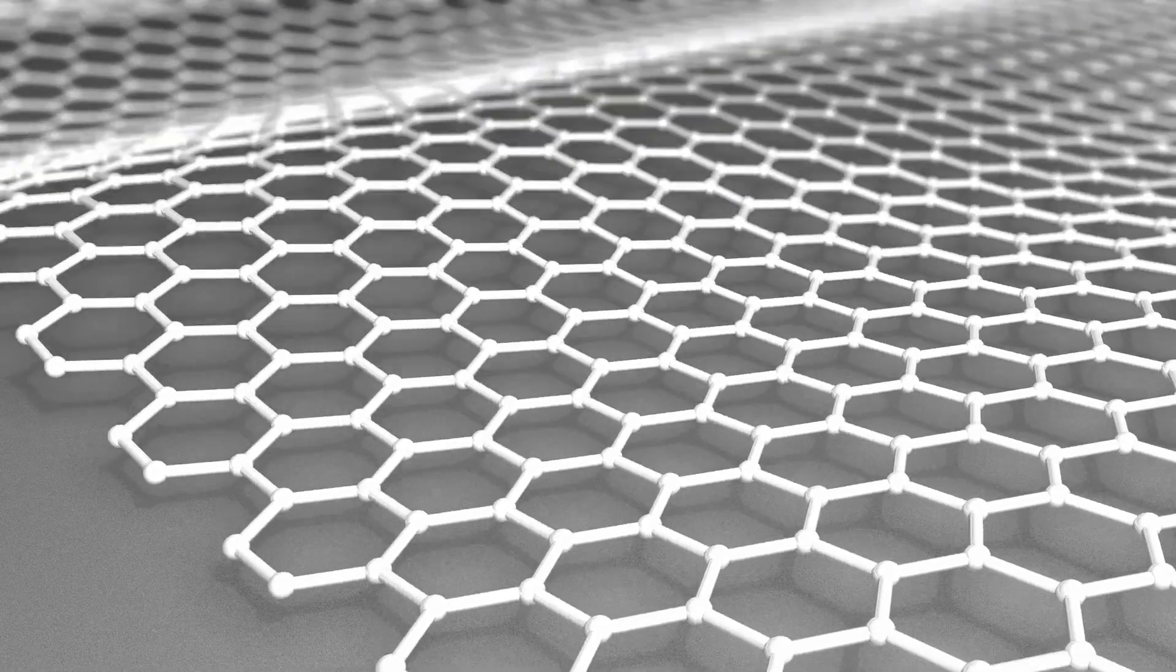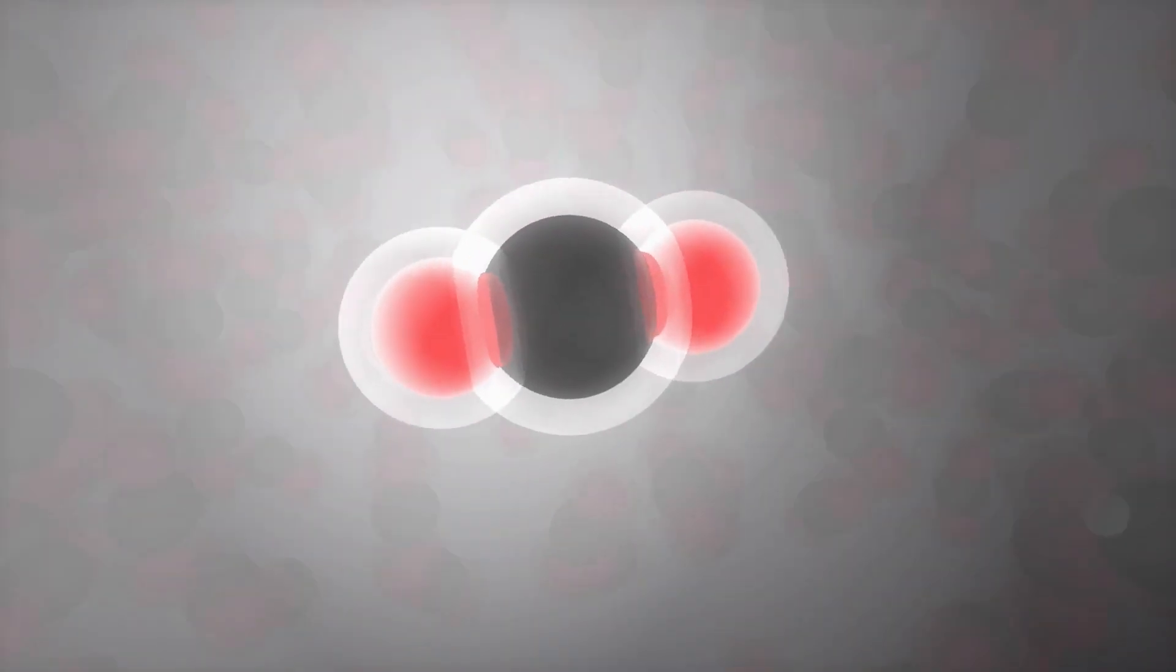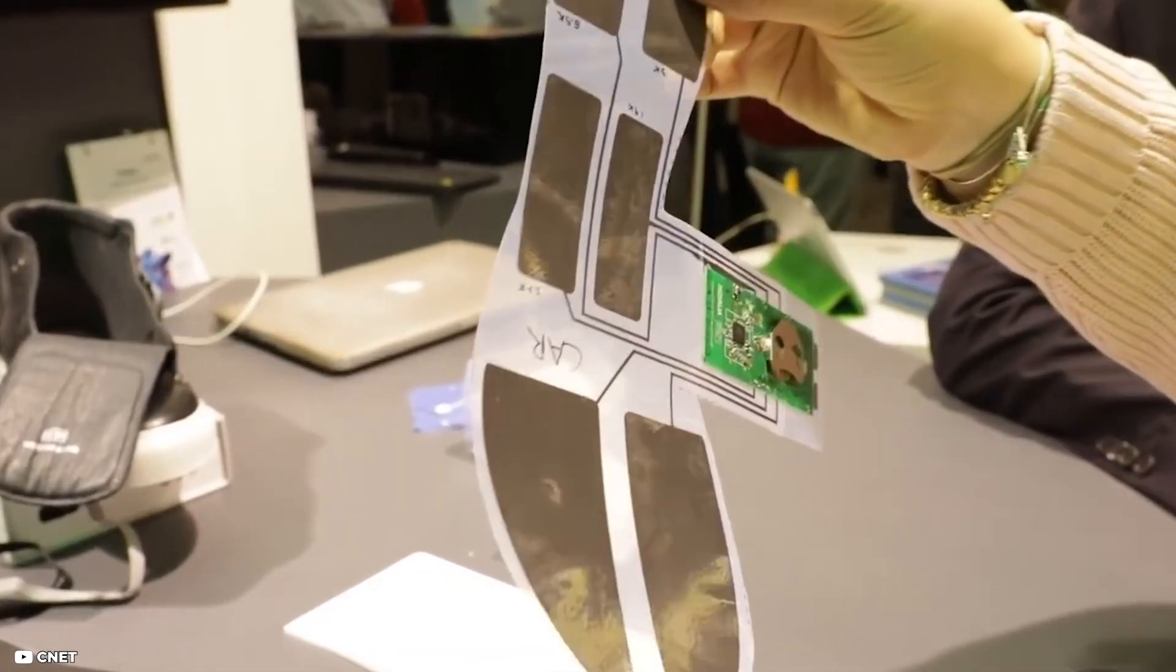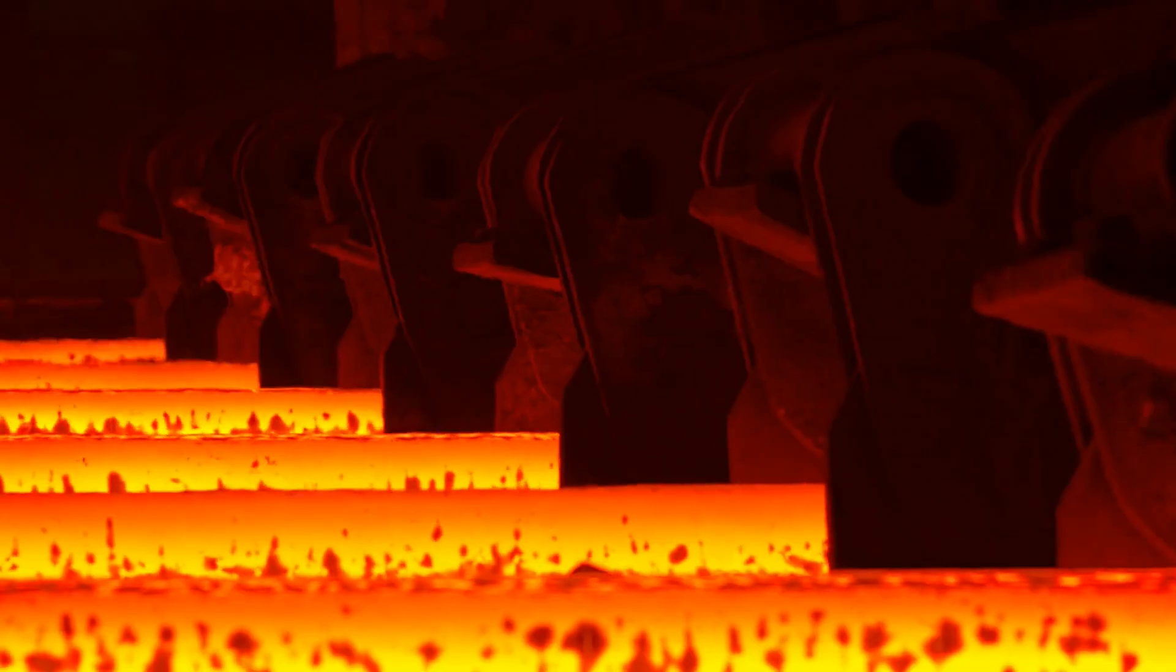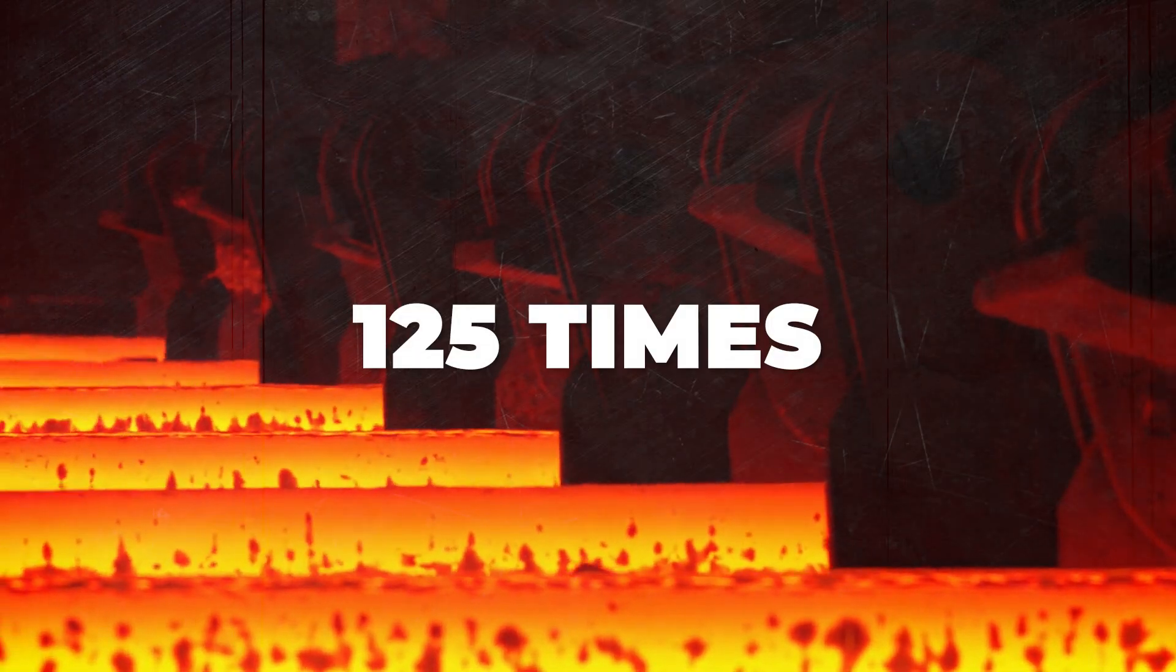Graphene is a one atom thick layer with extremely unique properties. Unlike carbon in its usual structure, graphene is almost nearly lossless conductive. It is also known for its high tensile strength, being able to withstand tensile forces 125 times greater than steel.